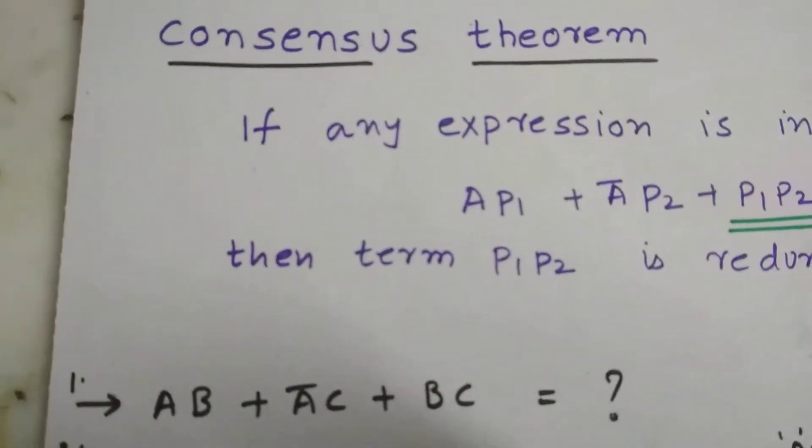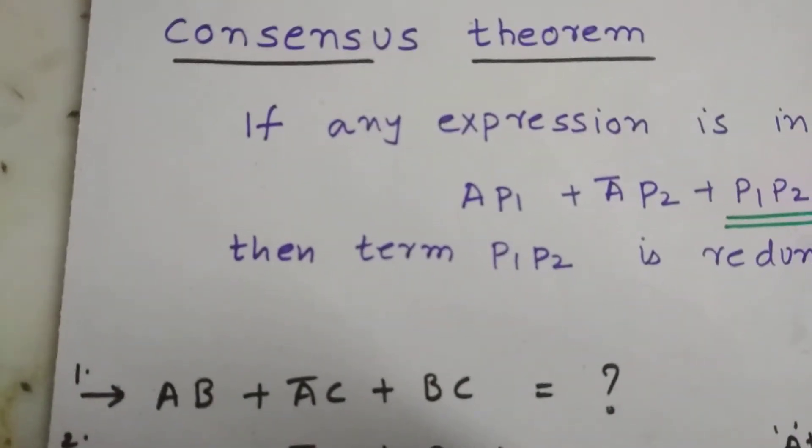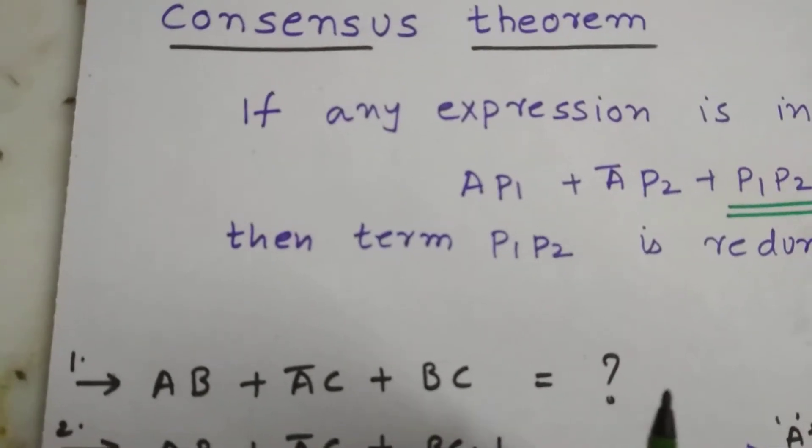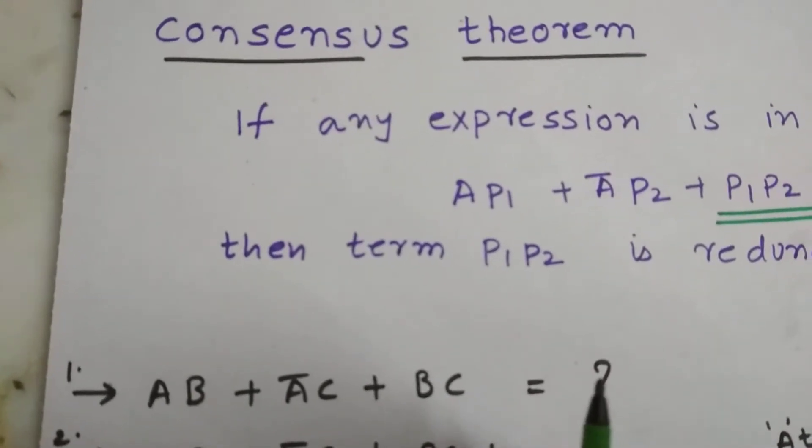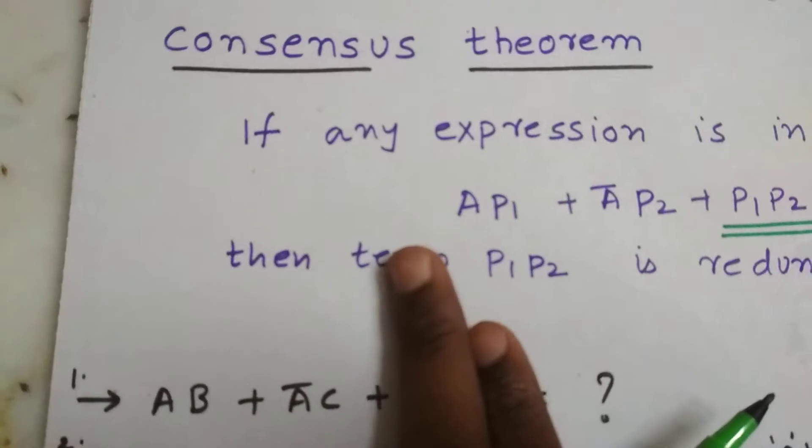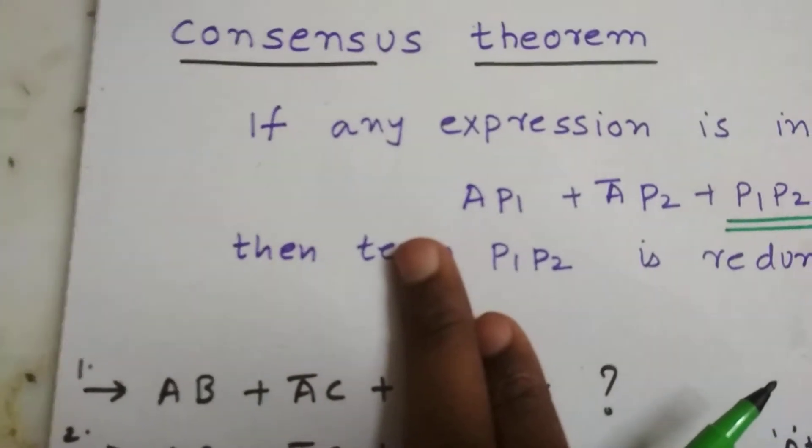So let us take this small example: AB plus A bar C plus BC. So what's the output? How is it equal to this if you remove B and C? How is it equal?